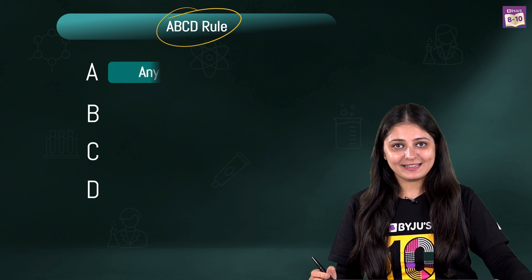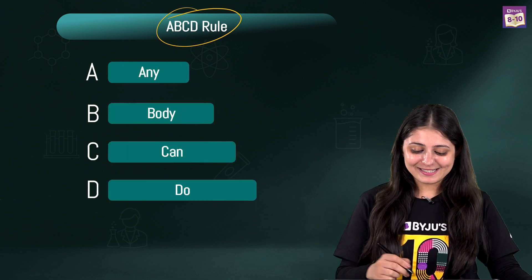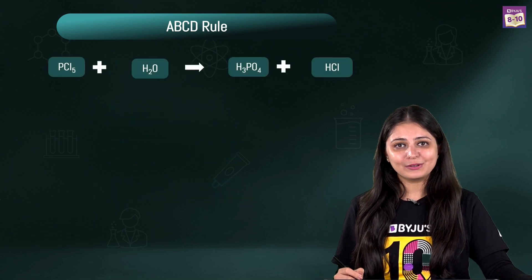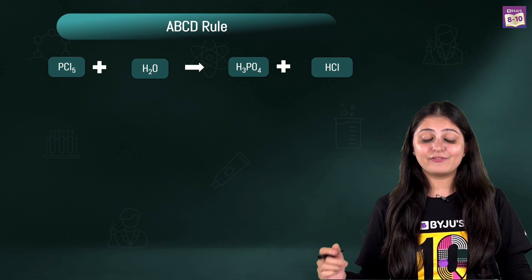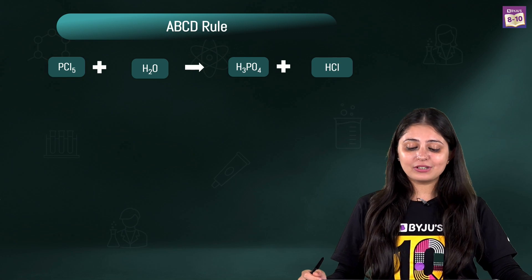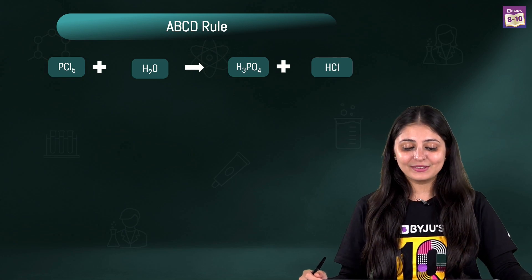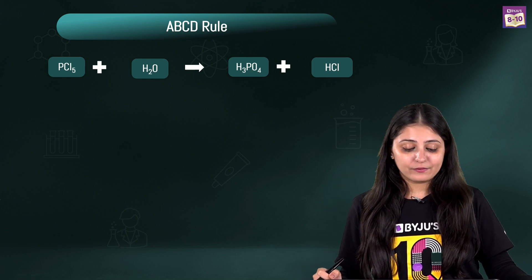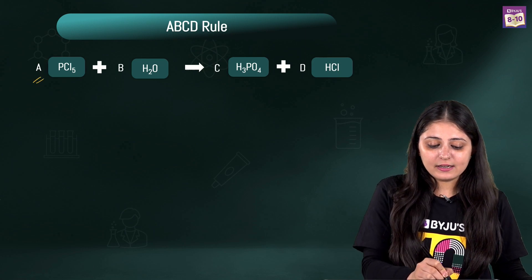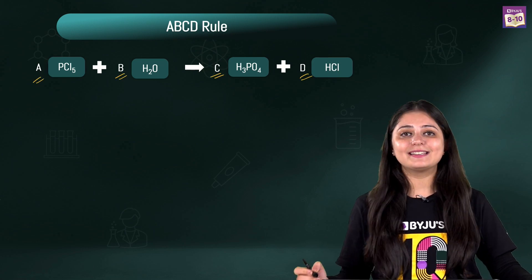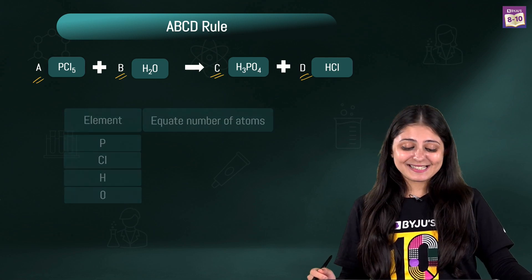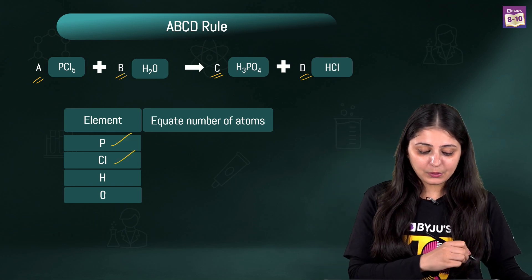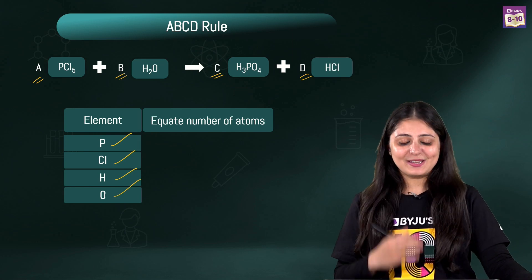The golden rule is the ABCD rule, which says 'Anybody Can Do Balancing.' So let's get started. We have a chemical equation here: PCl5 + H2O giving us H3PO4 + HCl. Based on this ABCD rule, the first step is to write the coefficients — we place A, B, C, and D on each compound. The next step is to write the elements involved: phosphorus, chlorine, hydrogen, and oxygen.